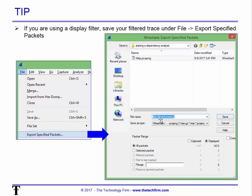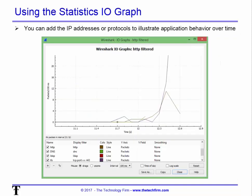Go to File > Export Specified Packets, make sure 'Displayed' is checked — it is by default, but just verify — then give it a new name like 'filtered.' Now you have a filtered trace file you can open and work with without needing the display filter. You can also go to the IO Graph and set up all the protocols to see where they appear during the process — that's also very helpful to have.